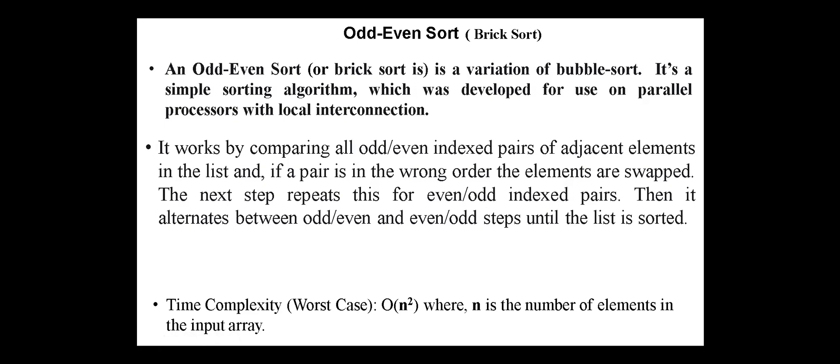It works by comparing all odd-even indexed pairs of adjacent elements in the list. And if a pair is in the wrong order, the elements are swapped. The next step repeats this for even-odd indexed pairs. Then it alternates between odd-even and even-odd steps until the list is sorted.